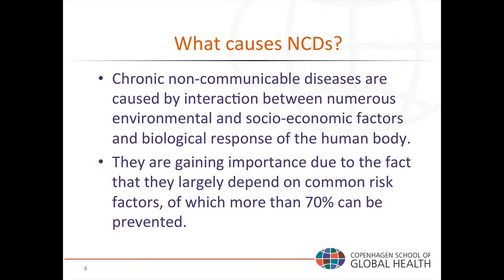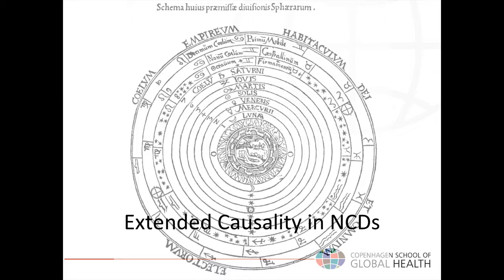NCDs are gaining importance due to the fact that they largely depend on common risk factors, of which more than 70% can be prevented. This highlights that there are modifiable or preventable risk factors, and other non-modifiable risk factors — sometimes also called determinants — and also that risk factors are different from causality. We will have a whole segment on risk factors later in the course. I'd like to extend your ideas by two examples, going a little beyond the classic or conventional causes: obesity causes diabetes, high blood pressure causes strokes. Or are those only risk factors?